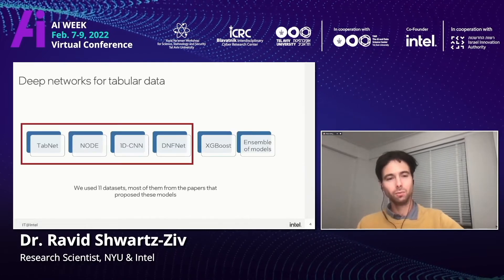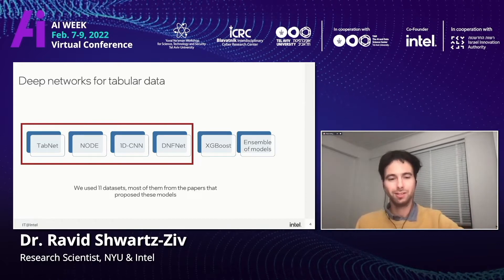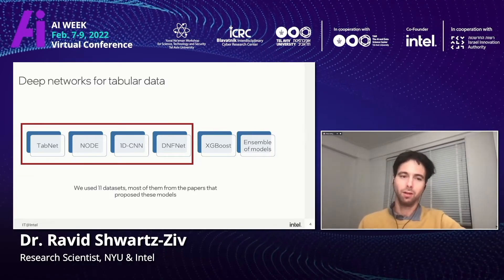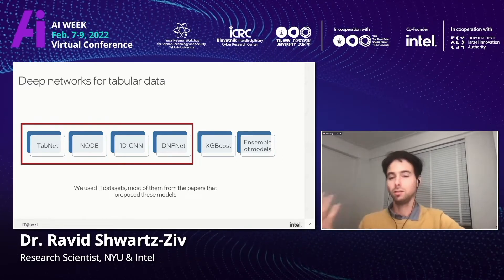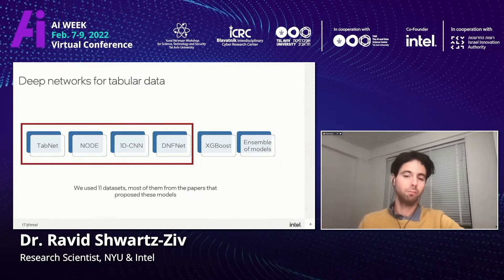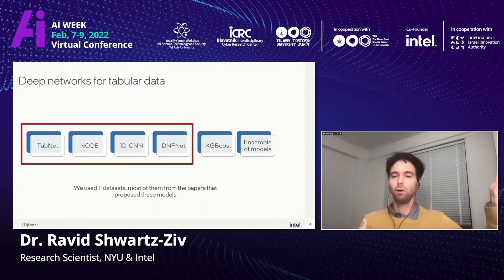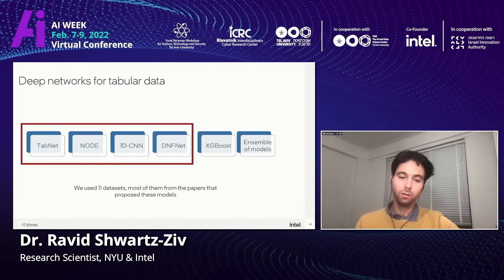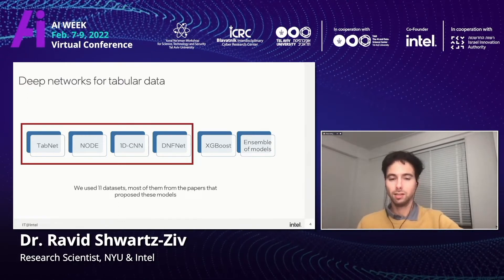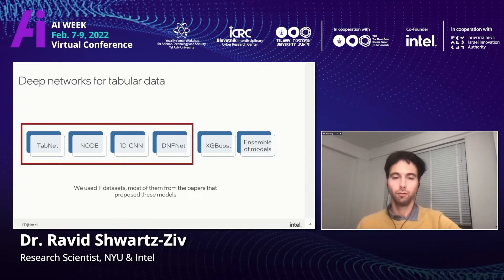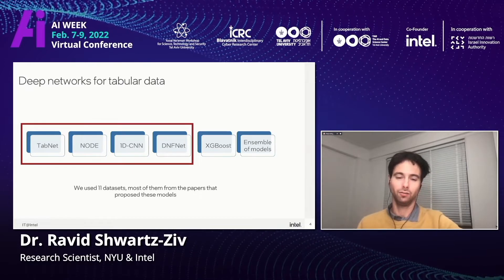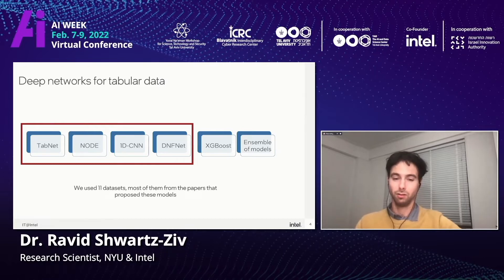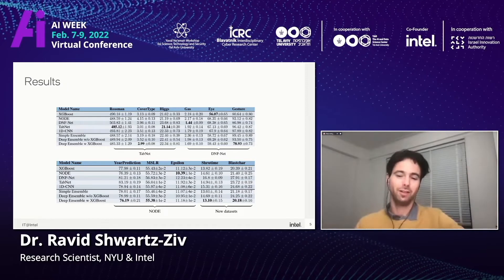We compared recent deep networks — TabNet, NODE, 1D-CNN, and DNFNet — to some baseline XGBoost. We also took an ensemble of all the models, just taking all the models and making a weighted average of their predictions. We used 11 different datasets, and most of these datasets were taken from the original papers of these networks. So for most of the datasets, we already know some of the results. We did a lot of experiments and got a lot of numbers.